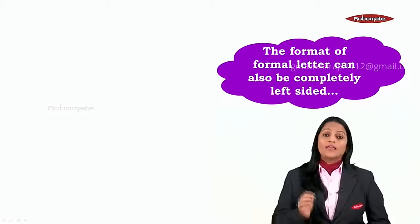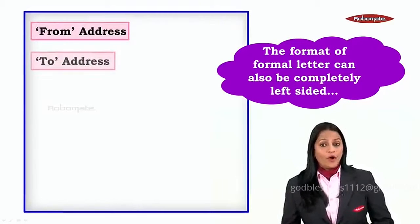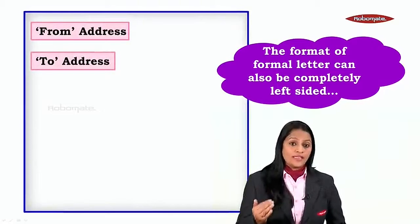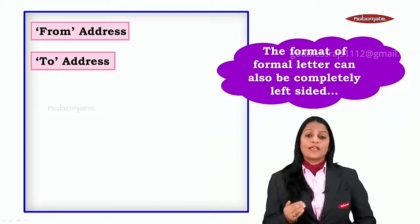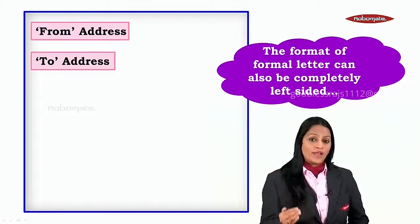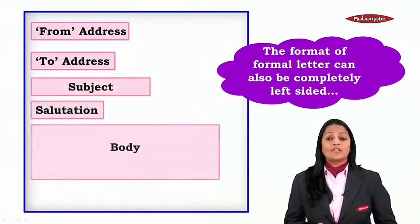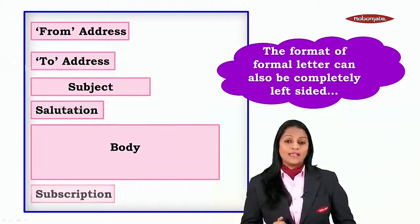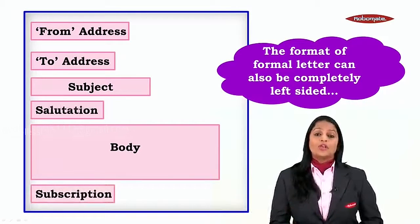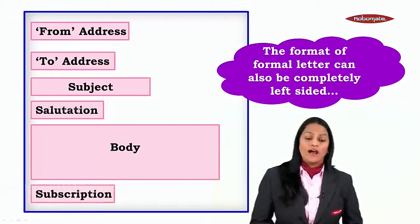A formal letter can also be written completely left-sided. In this format, the from address comes first, then the date just below the from address, then leave a line and write the to address, then the subject, then the salutation, the main body — all left-sided — and the subscription. So the letter could also be written in this manner. Both formats are accepted.